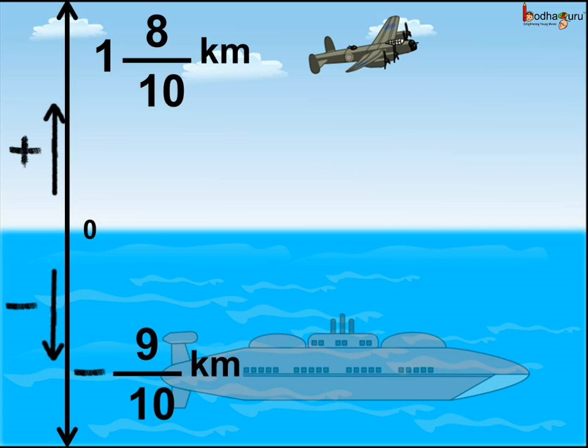The aeroplane is flying at 1800 metres which is 1 8 by 10 kilometre above the sea level. This height is represented by plus 1 8 by 10 kilometres and submarine is at 900 metres below the sea level which is 9 by 10 kilometres below the sea level in fraction.